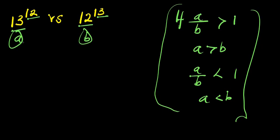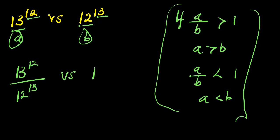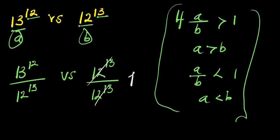13 to the power of 12 is our A, and 12 to the power of 13 is our B. So we compute A divided by B, that is 13^12 divided by 12^13. This eliminates the denominator reference, leaving 1 as the value we are comparing against.